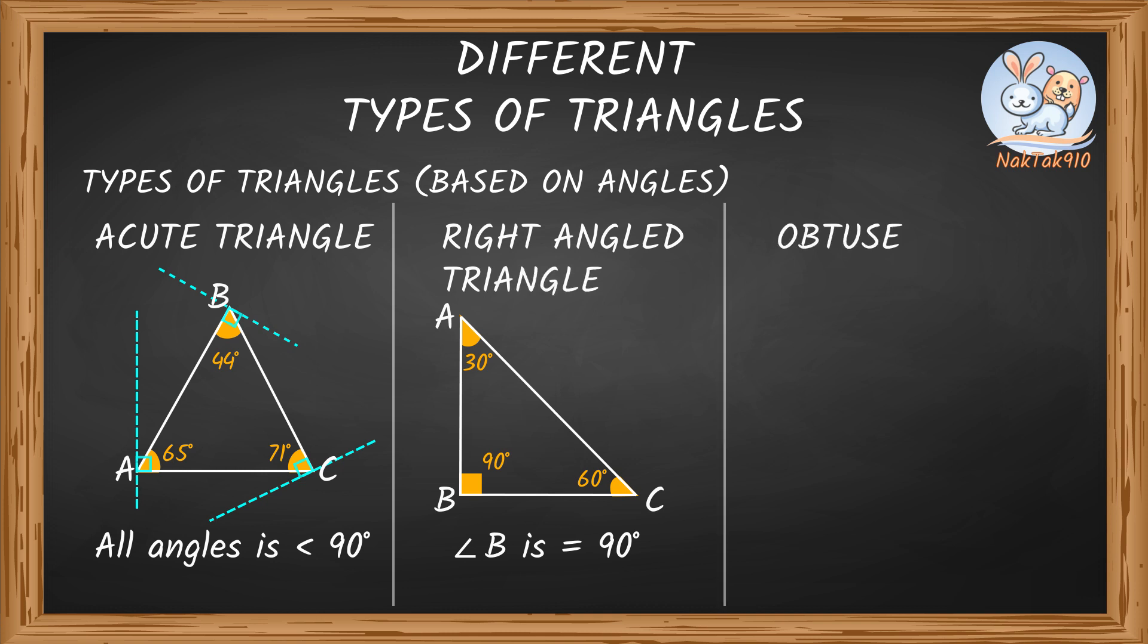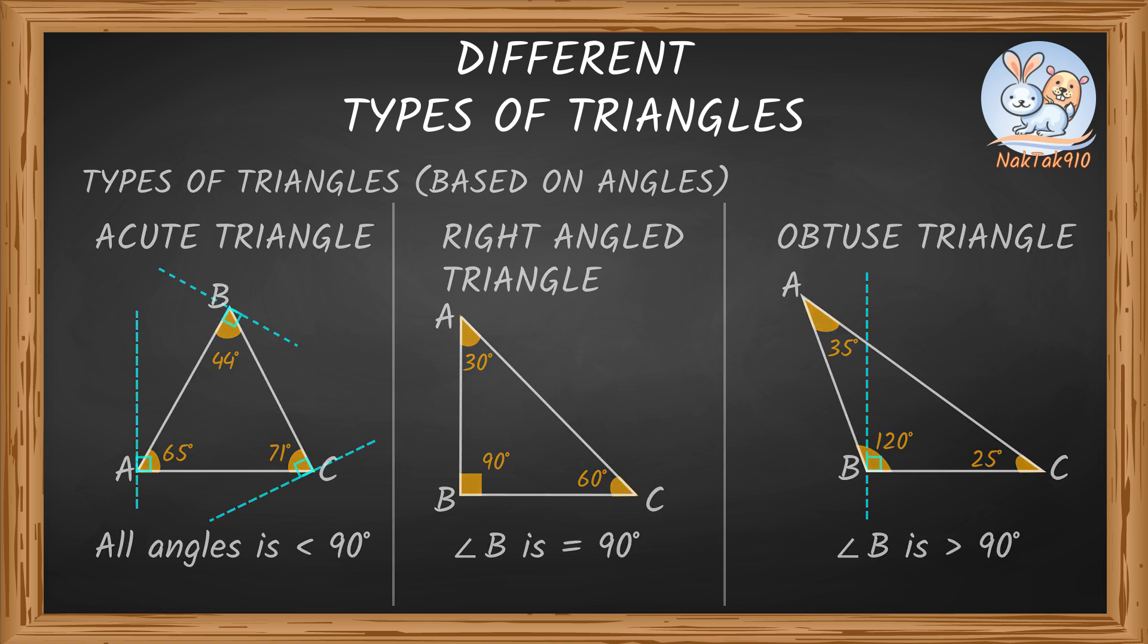An obtuse triangle is one in which one of its three angles measure greater than 90 degrees. That's one of its angle, an obtuse angle. This triangle ABC is an obtuse triangle because one of its angle, which is angle B, is an obtuse angle measuring 120 degrees.